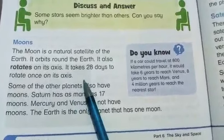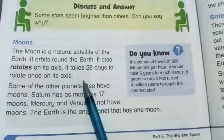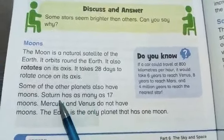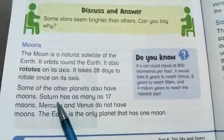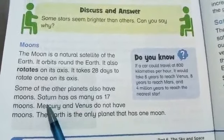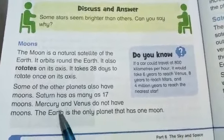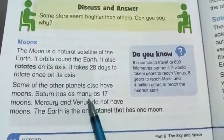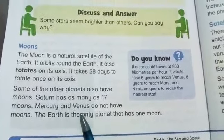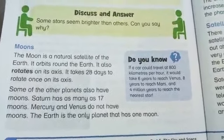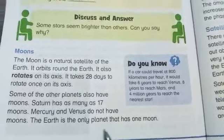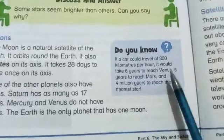Our planet Earth has only one moon, and many other planets also have moons. You know, there are eight planets overall. Some other planets have more than one moon. Saturn has 17 moons, and Mercury and Venus have no moons. Planet Earth has only one moon.